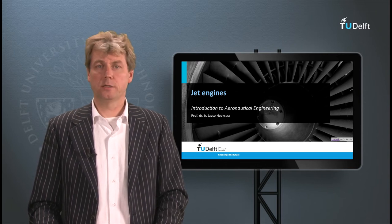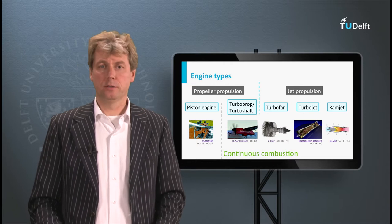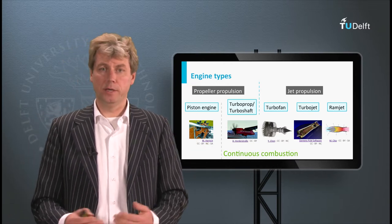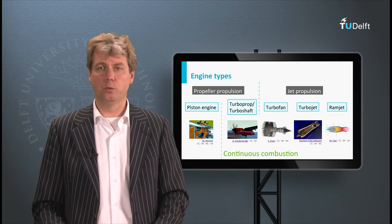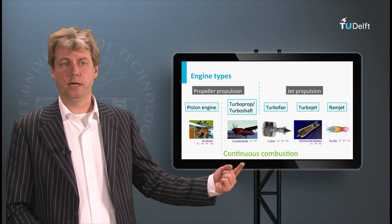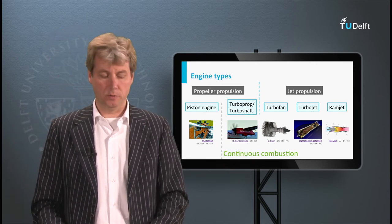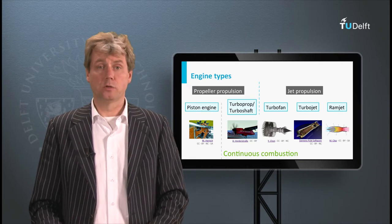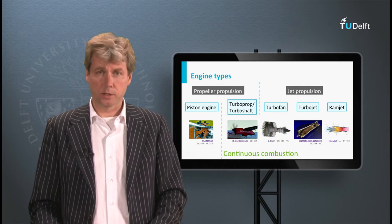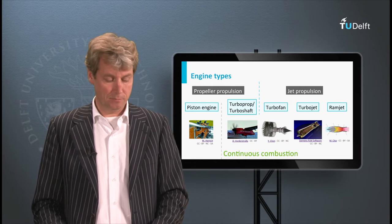In this video we discuss jet engines. In the previous video before the propeller clip, we discussed piston engines to explain the principle of how heat can be transferred into mechanical work. Today we will look at the continuous combustion engines — sometimes also called rotary compressor engines — and see how they work and how from a physics perspective they use the same principles.